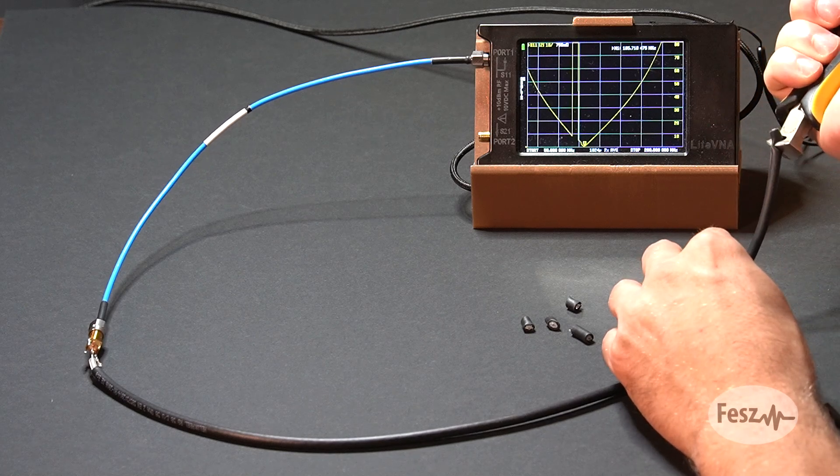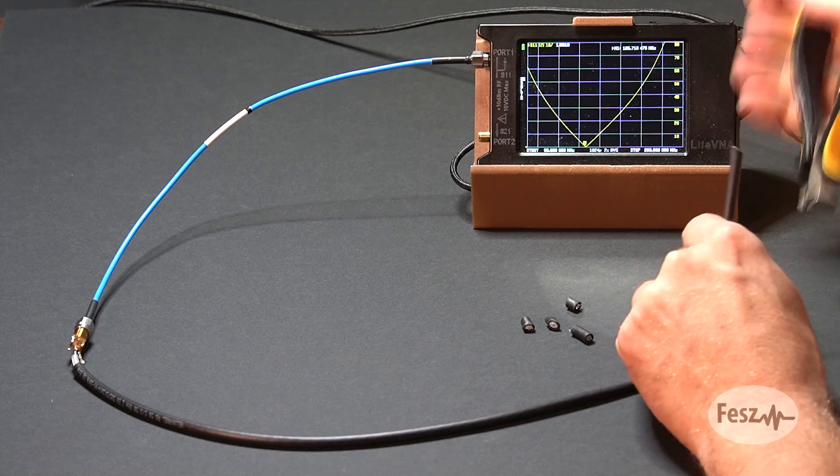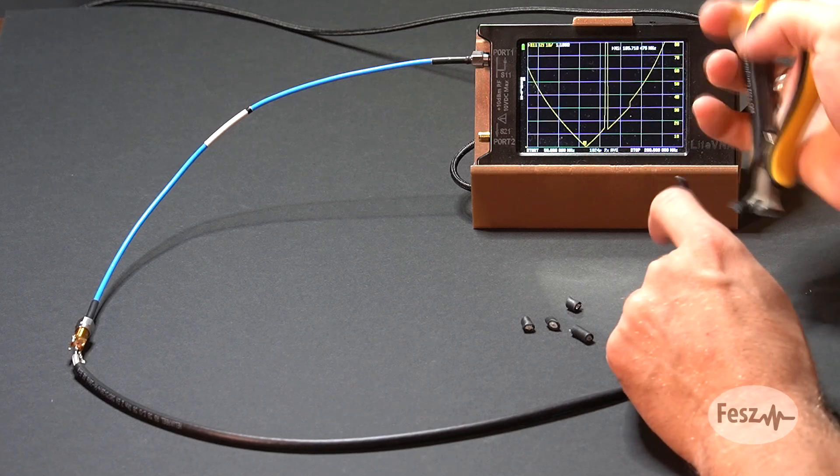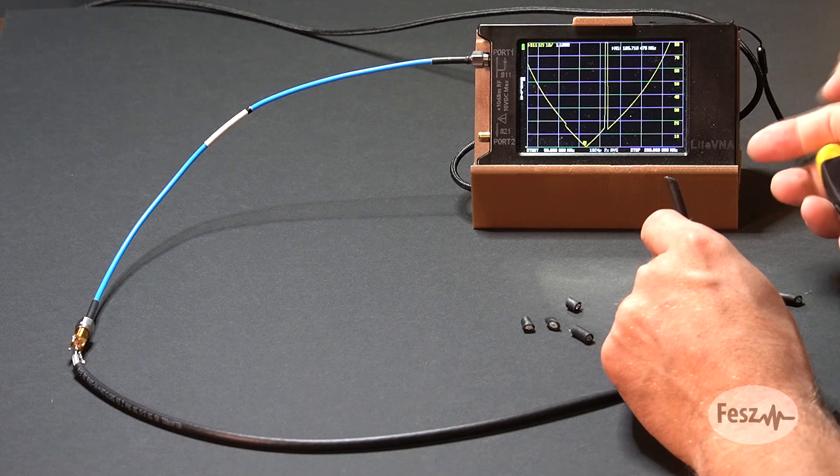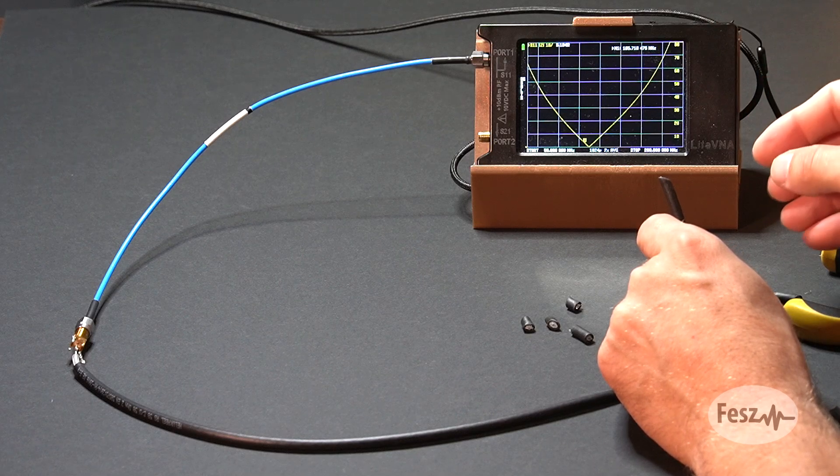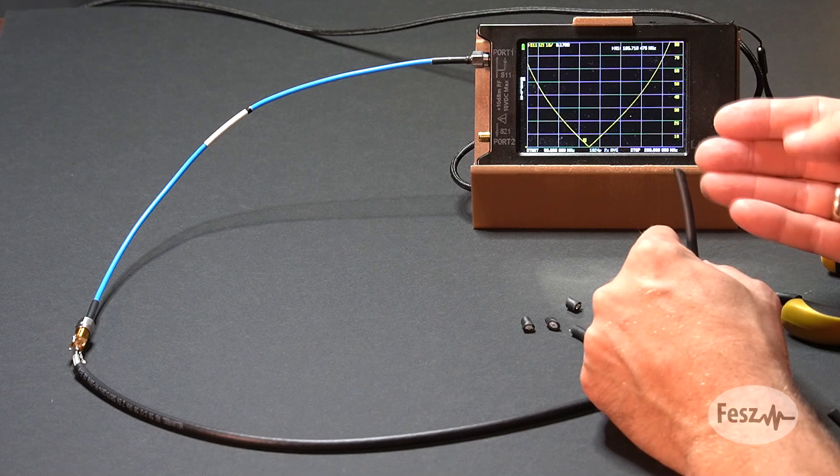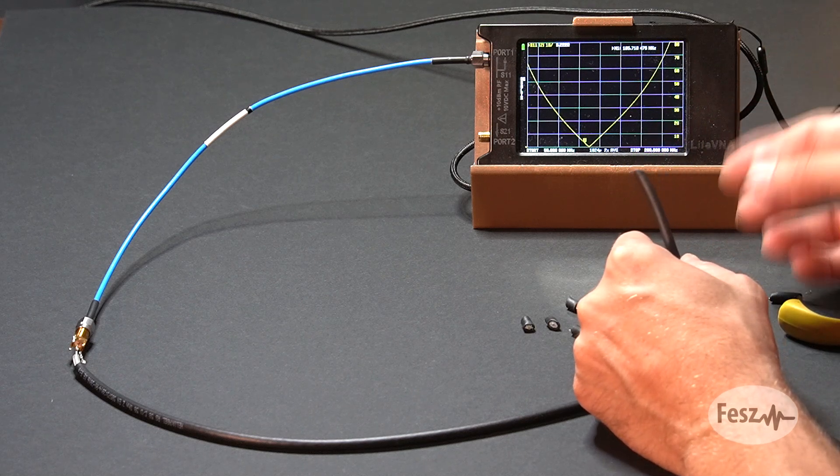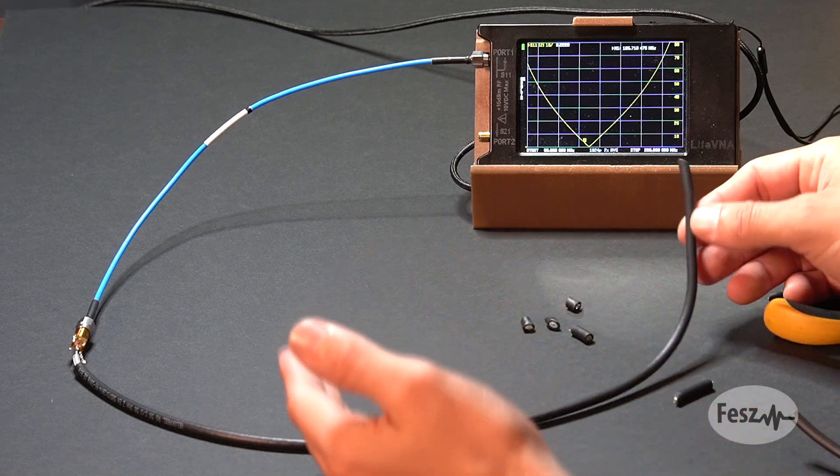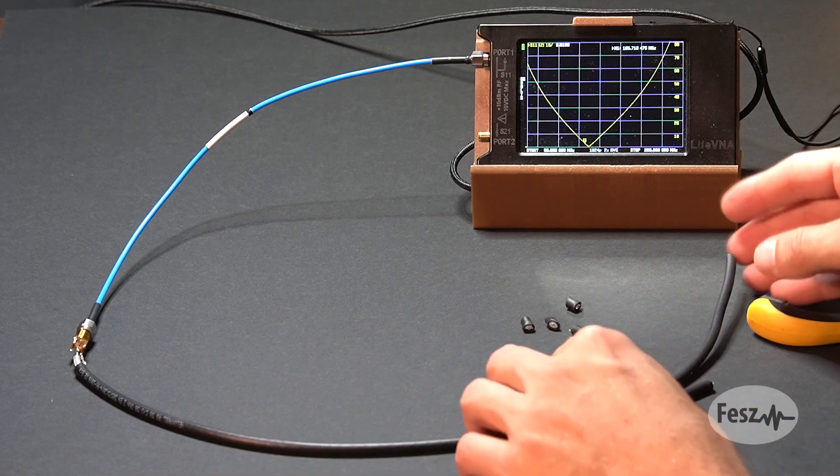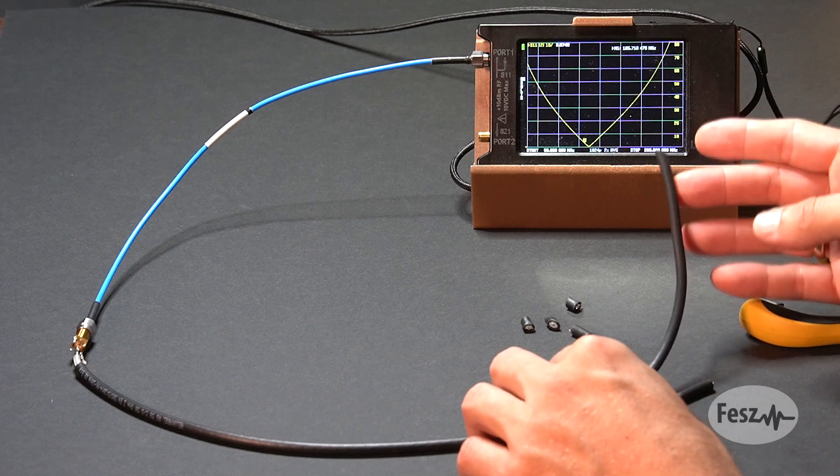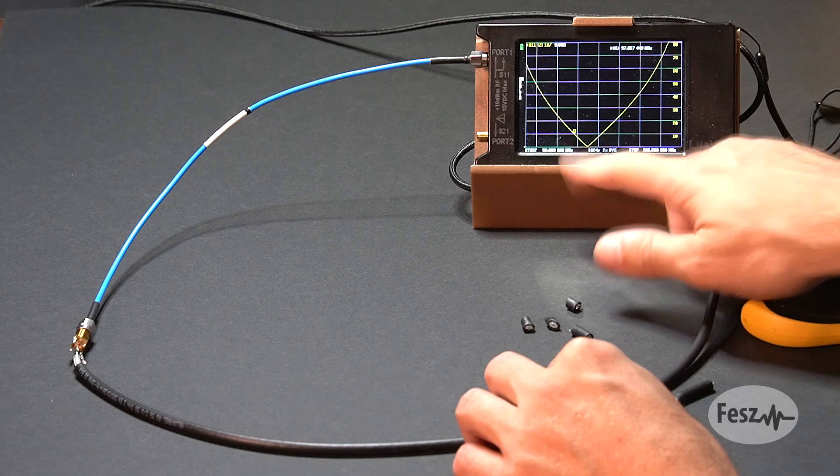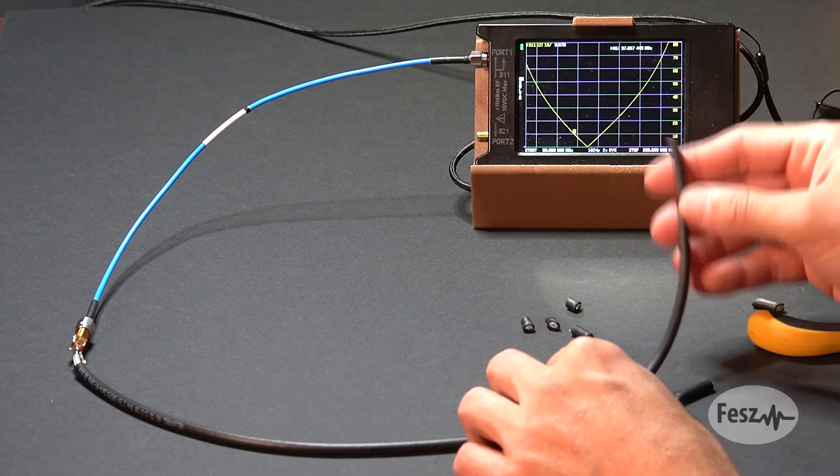So once you cut off a piece, the resonance frequency moves a bit higher. So cutting off more, it will move higher and higher. So just remember, you can always cut, move the resonance frequency higher, but you can never move it lower. For that, you will need a new piece of cable that has a longer length. So anyway, for my filter, I need a cable that has a resonance at around 97 megahertz, somewhere around here. So I'll need to start over again.